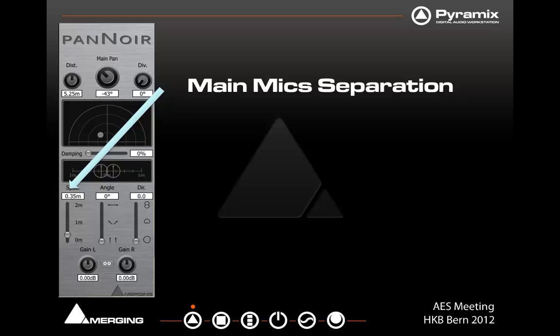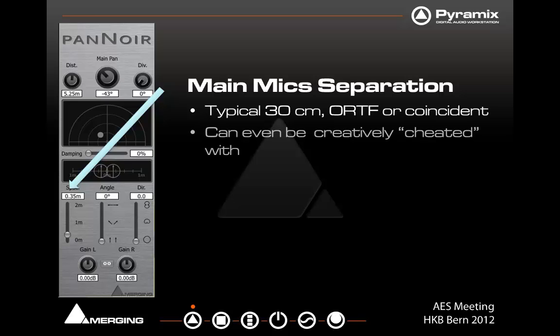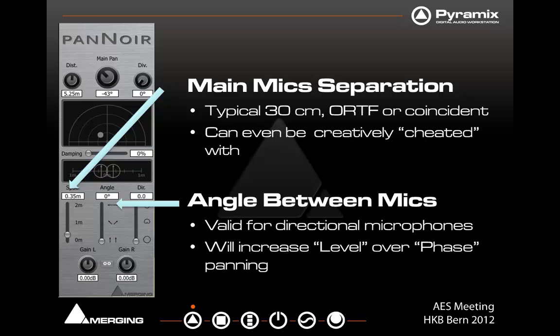We can also choose the main mic separation — typically 30 centimeter NTF or coincident — and it can even be creatively cheated with; we can actually push them up to a meter away from one another. And then the angle between the microphones, whether they're straight on, at a 45 degree angle, or pointing outwards at 90 — whatever it might be.